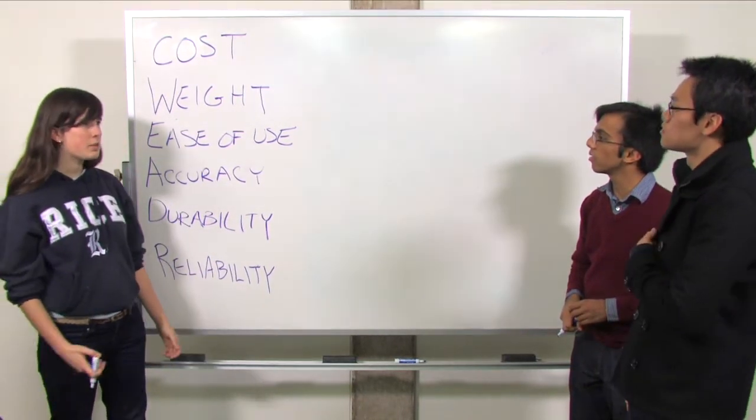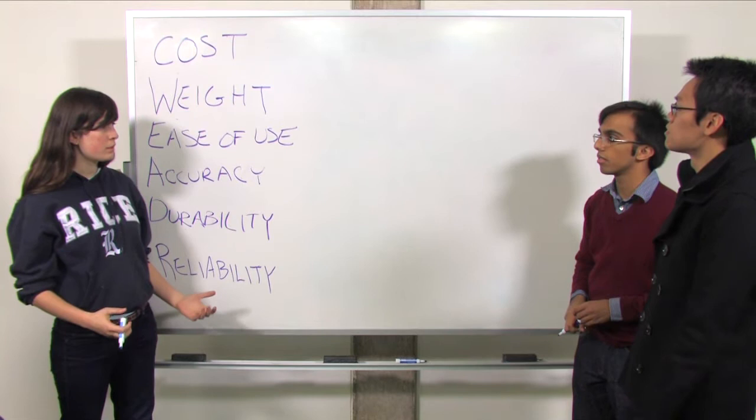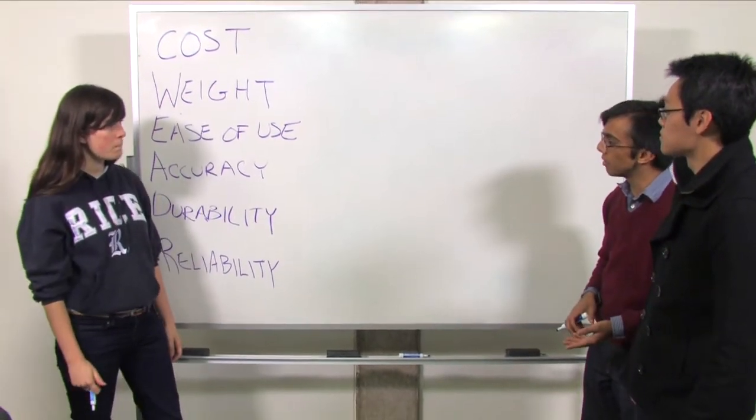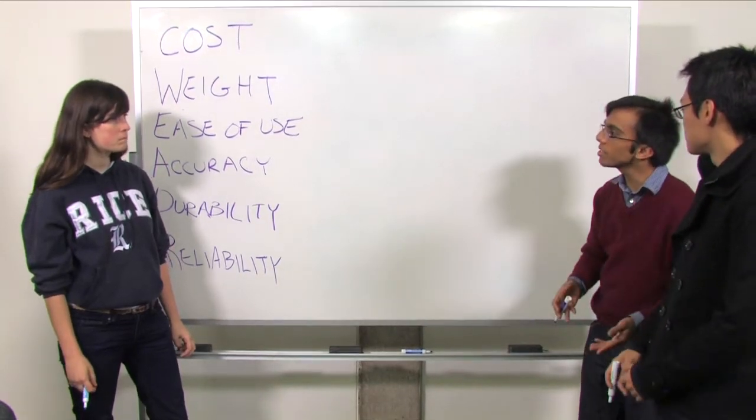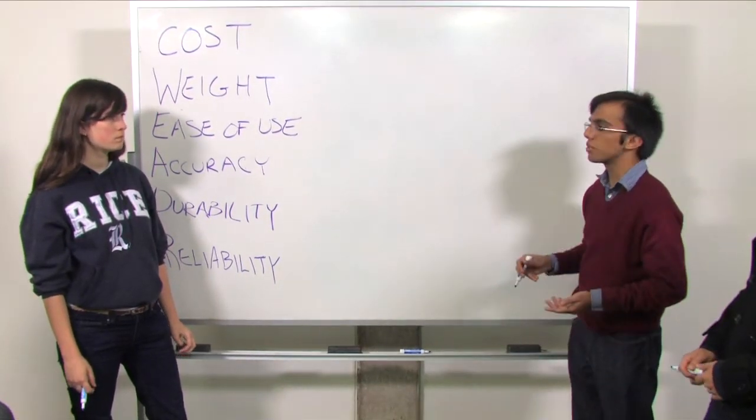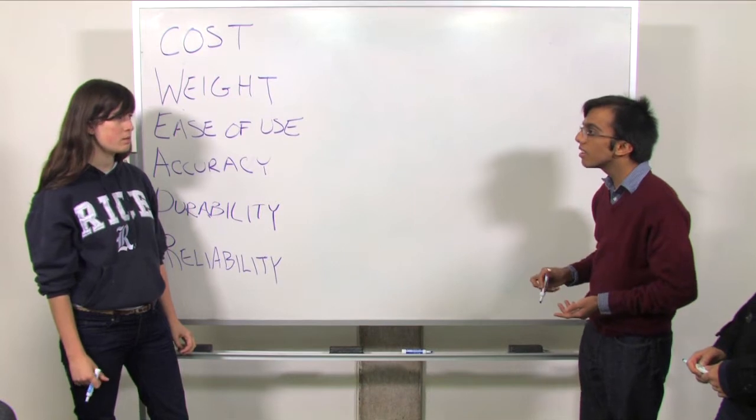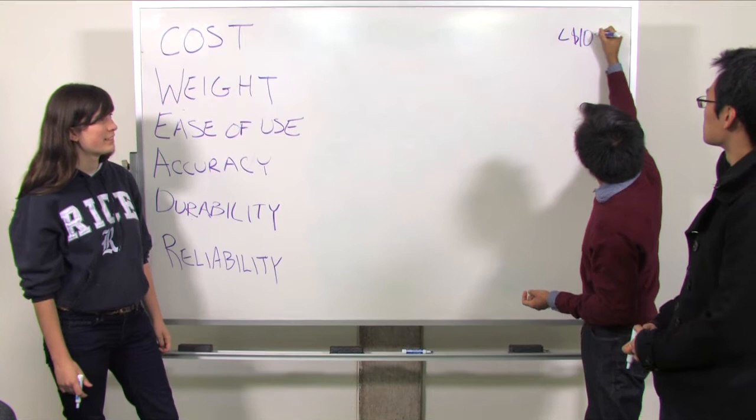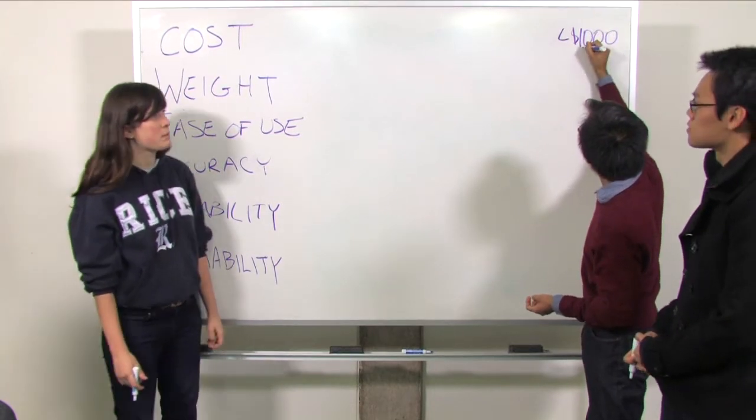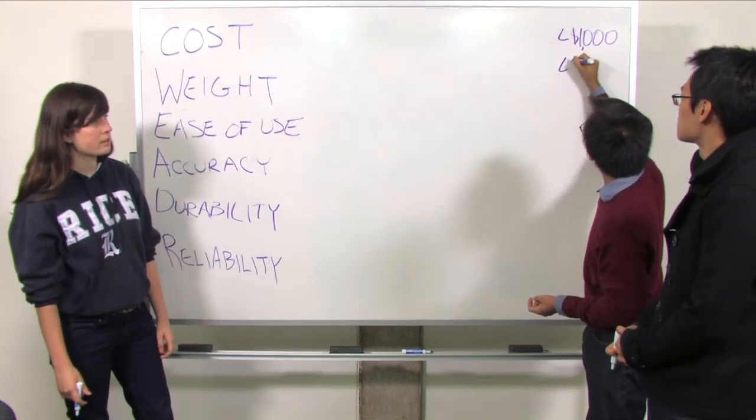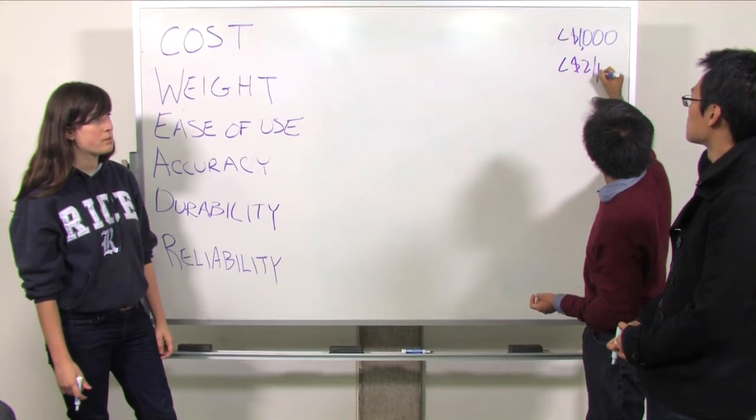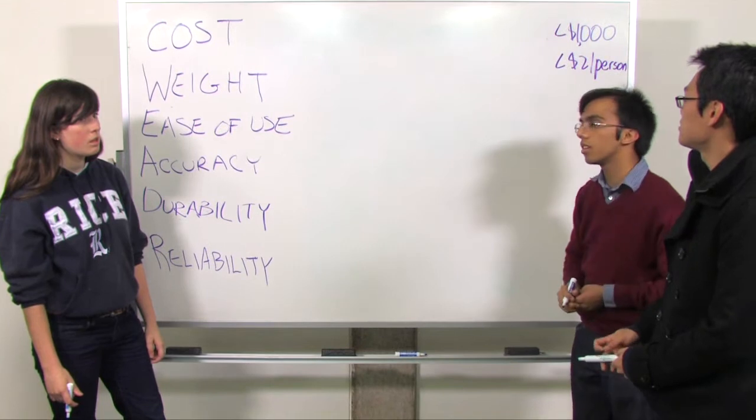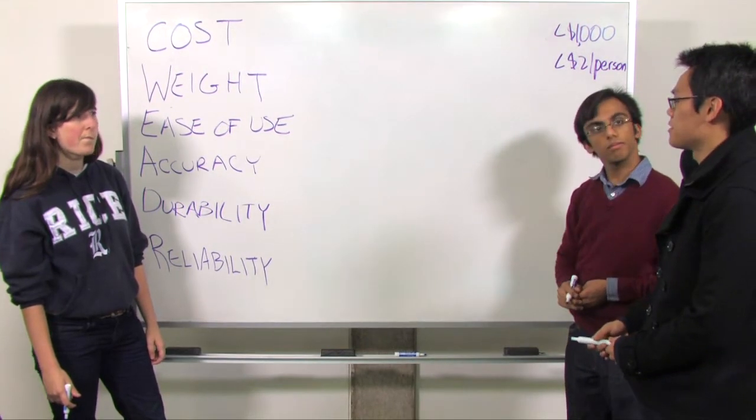And so for cost, how much do we think that we wanted our device to cost? Looking on Google, I think that the cost of an infusion pump which they use in the U.S. is like less than $1,000. Okay, so that seems really high, especially because it's for the developing world. Yeah, I've read that they actually only spend about $2 a person on health care. Would less than $100 be good then, especially if we're working with the developing world?